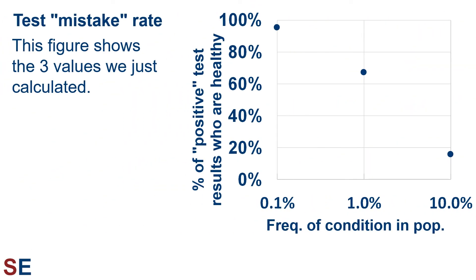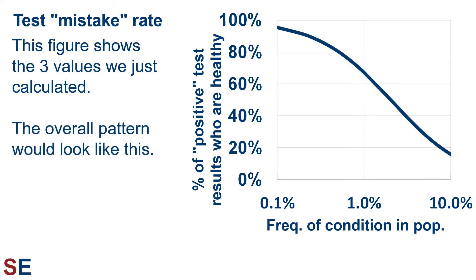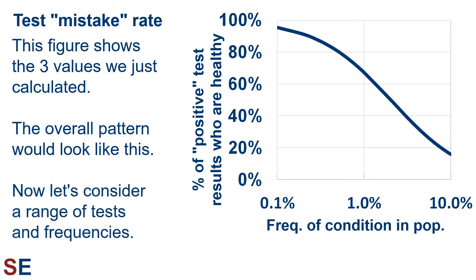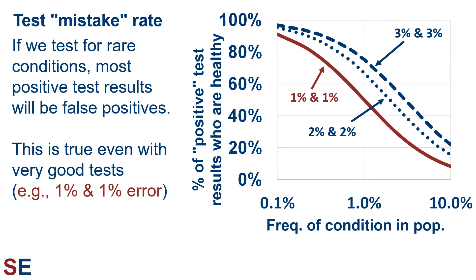Let's look at these results a slightly different way. This figure shows the three values we just calculated. On the y-axis is the percent of people who test positive but don't have the condition. On the x-axis, we have the frequency of the condition in the population on a log scale, ranging across the three values we just looked at. The overall pattern would look like this if we calculate the overall false positive rate for the entire range of values on the x-axis. But this is just the pattern for one example test — now let's consider a range of tests and frequencies.